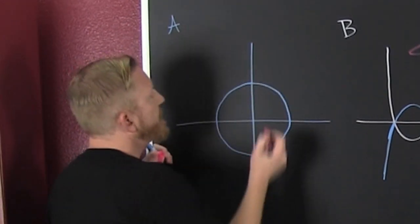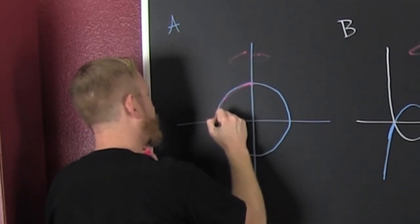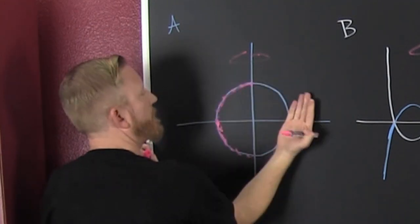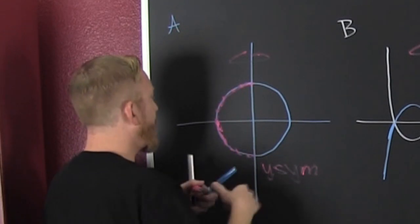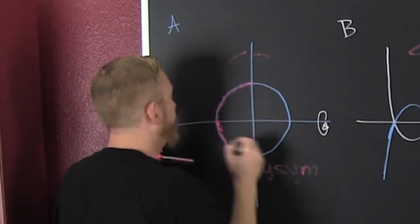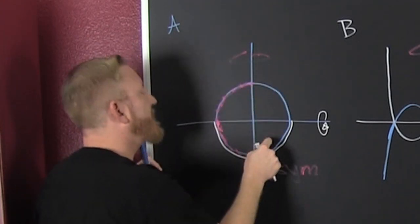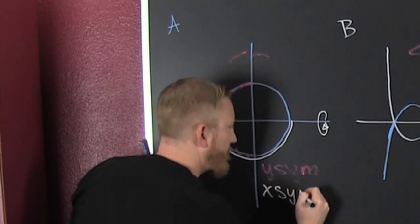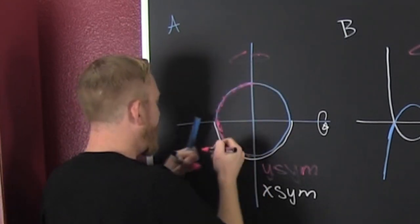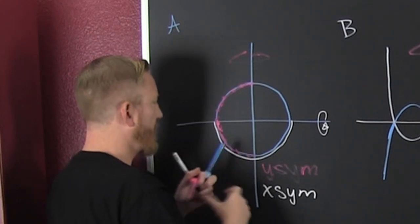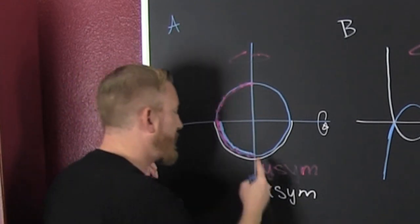Let's do this one over here. If I flip it across the x-axis, it lays on itself — so it's x symmetric. But what if I first flip along y, and then flip along x? It lays on top of itself, so it's origin symmetric.